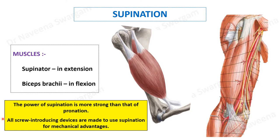The point to be understood here is that the power of supination is stronger than that of pronation. This is why all screw-introducing devices are made to use supination for mechanical advantage.